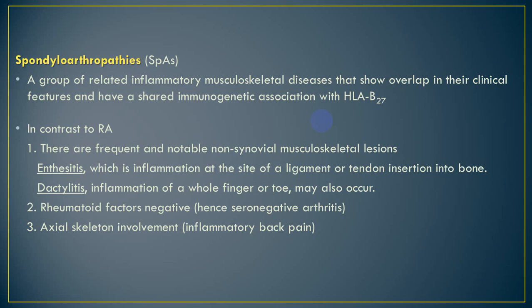We sometimes call it seronegative Spondyloarthropathy. Rheumatoid arthritis is seropositive while this is seronegative. It shares some features with rheumatoid arthritis, but serology is different. In contrast to rheumatoid arthritis, Spondyloarthropathy has frequent and notable non-synovial musculoskeletal lesions, including ligament, tendon, periosteum, and other bone lesions.